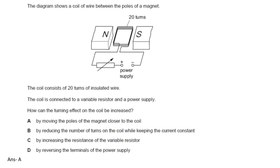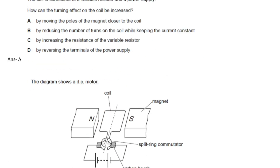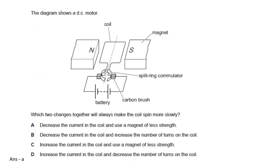We have to choose the option that increases the turning effect. Looking at all four options, option A is correct: by moving the poles of the magnet closer to the coil. The remaining three options would decrease the strength of the motor.